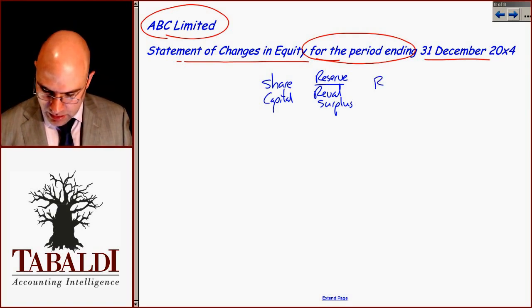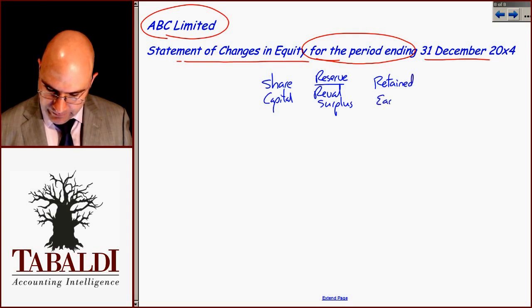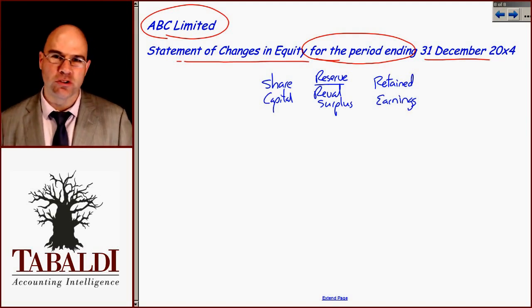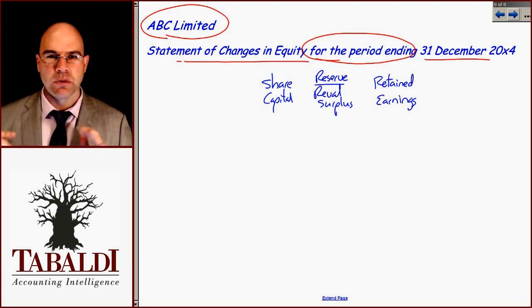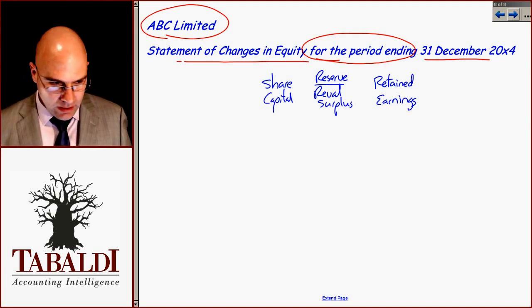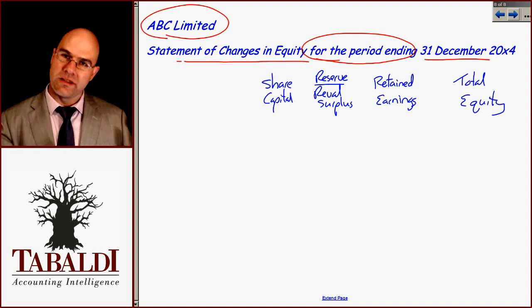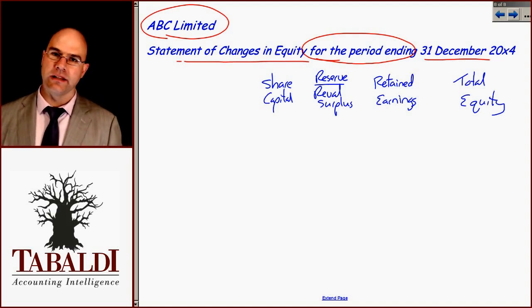Then there's going to be retained earnings — my accumulated profits. In a group scenario you'll deal with something called non-controlling interest, but not for this course. Then you'll have a total equity column, and this is going to be done from one side of the page to the other, left to right.